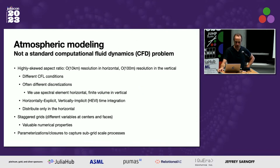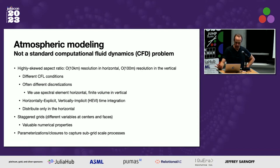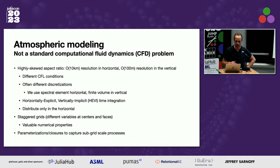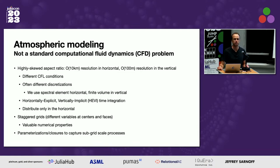I ended up working more on the atmospheric modeling side. There's a talk by Oceannigans and a whole session this afternoon on Earth system models, including some of my collaborators. The particular thing I've been working on mostly is the atmospheric modeling. It's a very slightly odd problem numerically — you have a very skewed aspect ratio. The resolution of an atmospheric model is somewhere around 10 kilometers, depending on how big your supercomputer is.